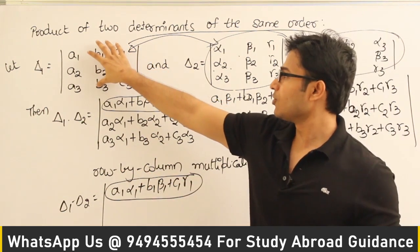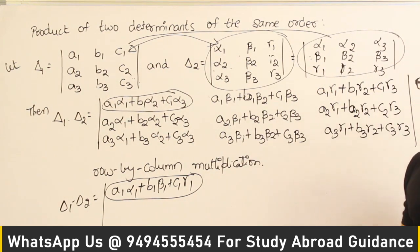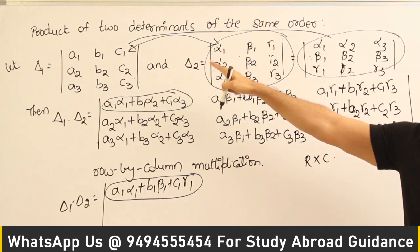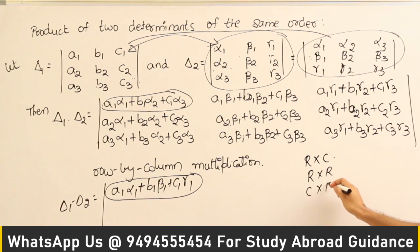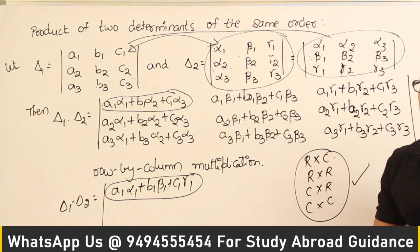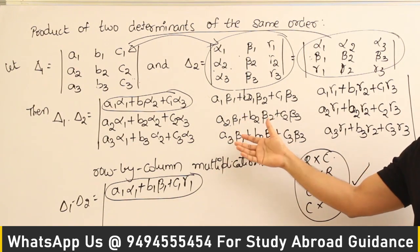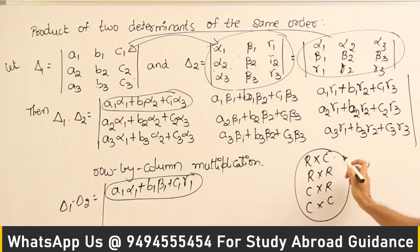Interestingly, you can even take the transpose of this and call it column-by-column multiplication or column-by-row multiplication. So when you have two determinants and you are trying to multiply them, you can either go with row-by-column, row-by-row, column-by-row, or column-by-column multiplication. Whatever order you follow, the final value of the determinant is not going to change. The arrangement of elements may look different, but the final value of the determinant will remain the same.